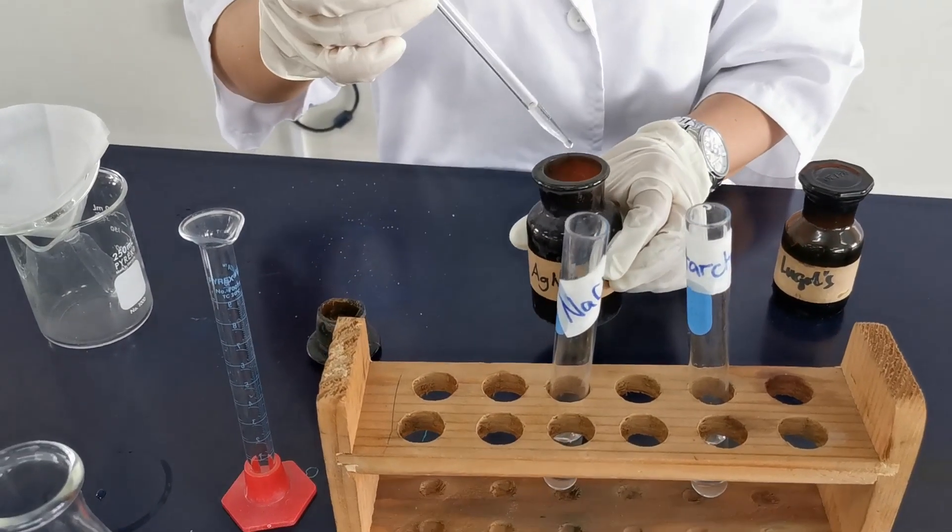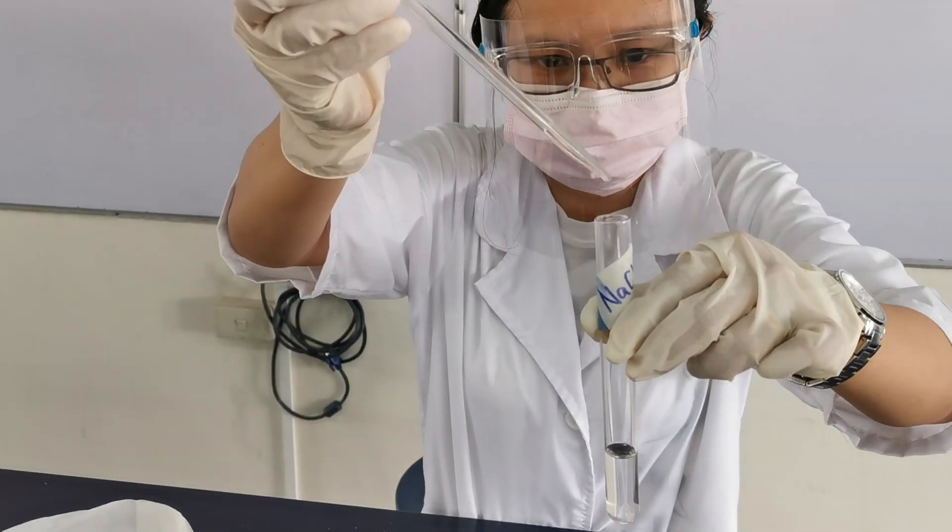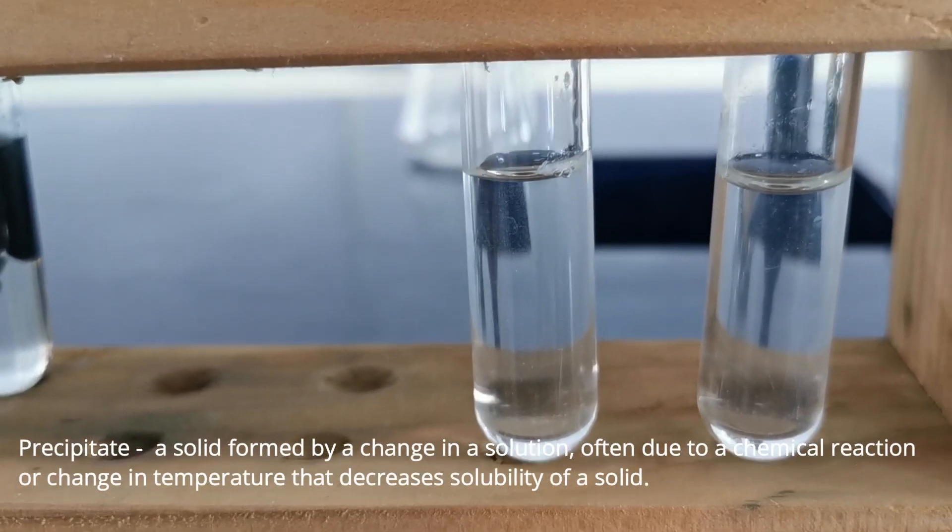Next, we add a drop of silver nitrate. The formation of a white precipitate indicates the presence of sodium chloride.